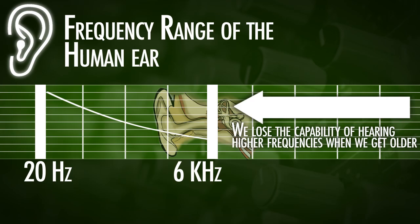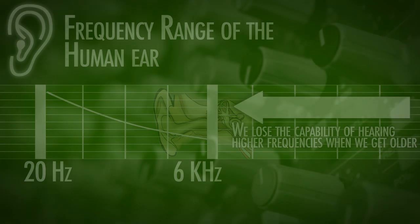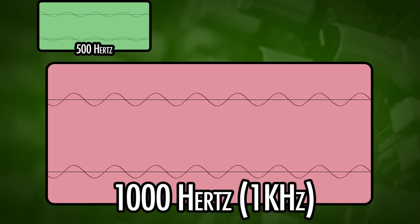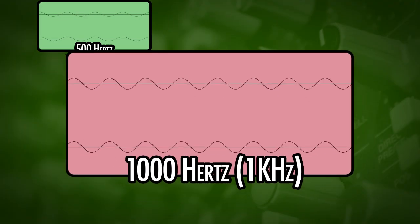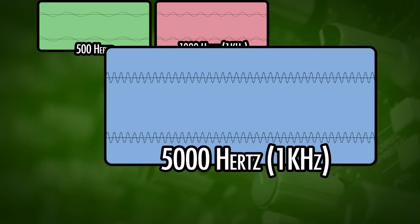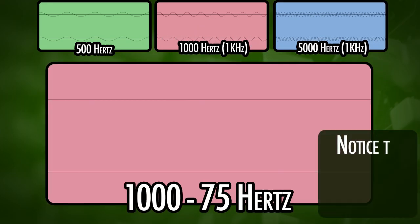Let's listen to some sine waves so you get an idea of what they sound like. This is a 500 Hertz sine wave. This is a thousand Hertz sine wave. This is a 5,000 Hertz sine wave. This is dropping from thousand Hertz to 75 Hertz.